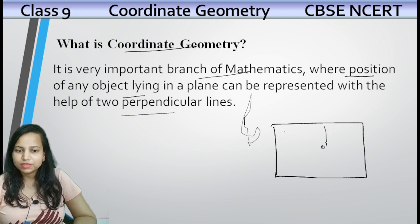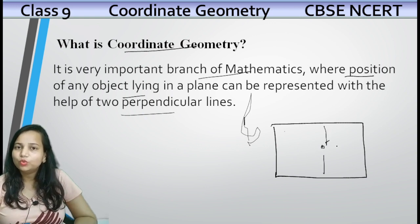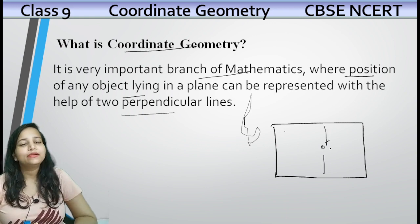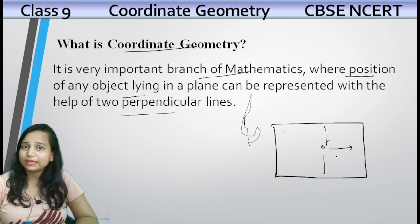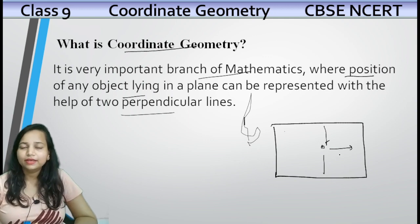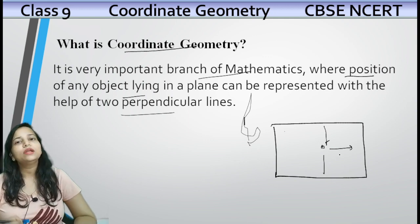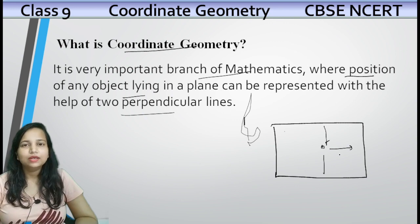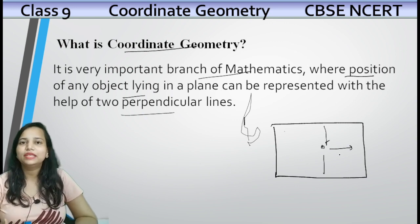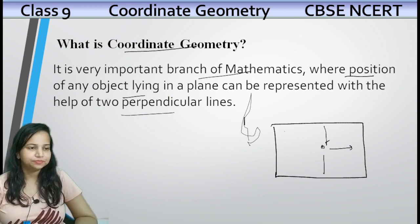If you say 'ma'am top se paas mein hai, border se door hai, right side se approximately 10 cm hai' — so this is not an appropriate way to locate any object. So with the help of Coordinate Geometry, hum object ki position ko find out kar sakte hain.